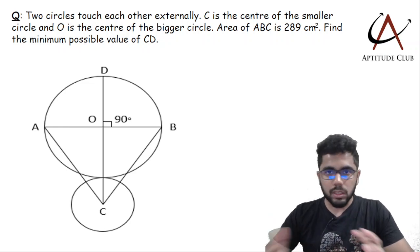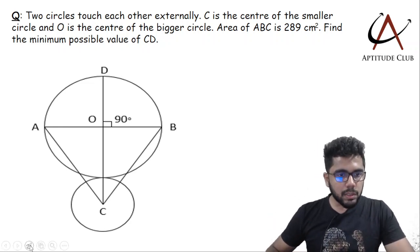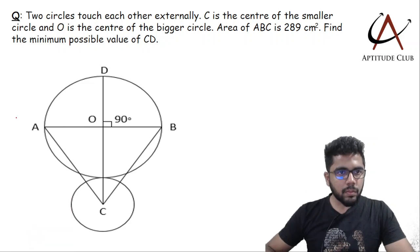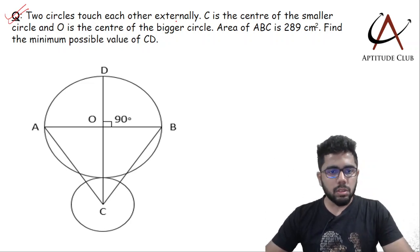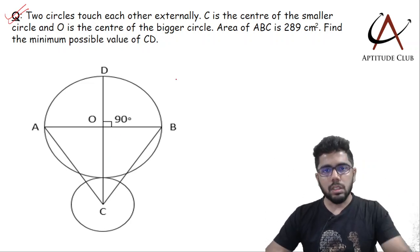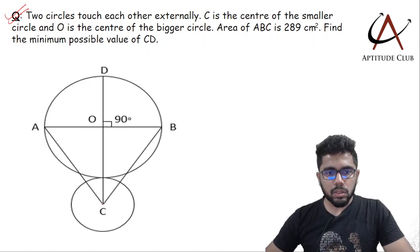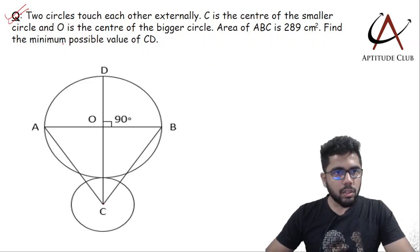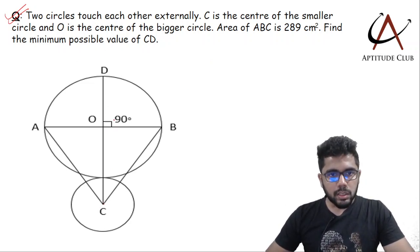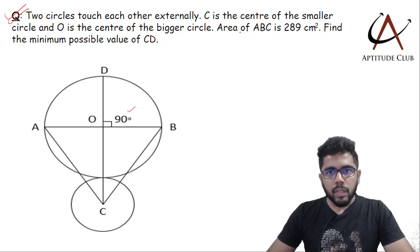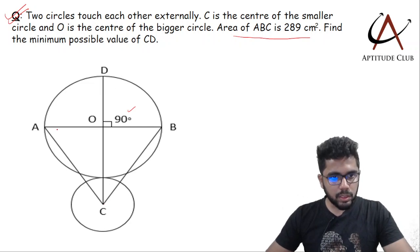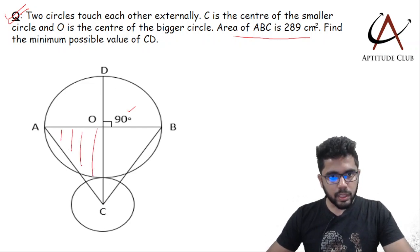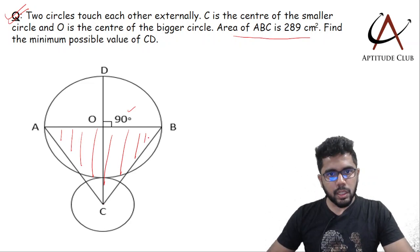Check whether your answer is correct or not. So what has been given here is that there are two circles that touch each other externally - tangential circles. Both circles just touch each other. C is the center of the smaller circle and O is the center of the bigger circle. This angle is 90 degrees. The area of triangle ABC is 289 square centimeters.